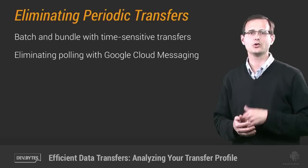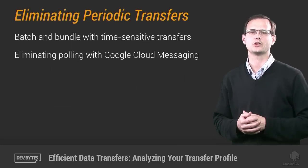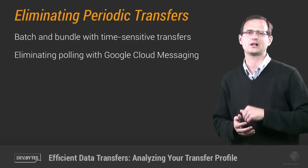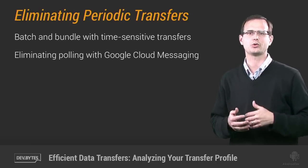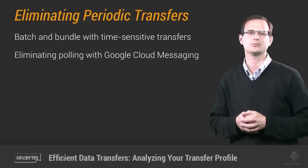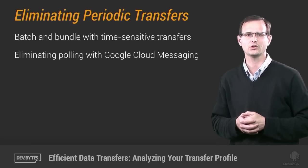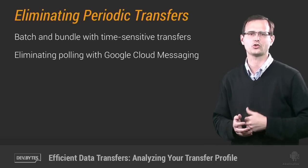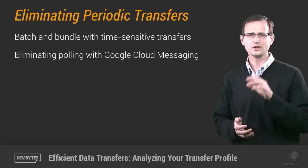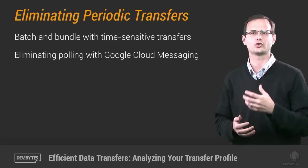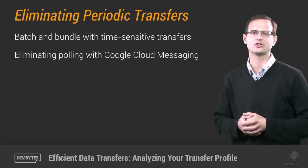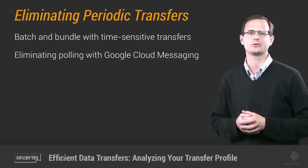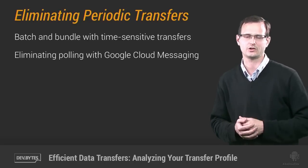You can eliminate both using some simple best practices. Anything that's not time sensitive, such as analytics data, ad impressions, or anything else that doesn't have a direct impact on the user experience, should be queued up and batched to be transferred together as a group. The best approach is to simply fill the queue and trigger all these delay-tolerant downloads the next time you need to perform something that is time sensitive.